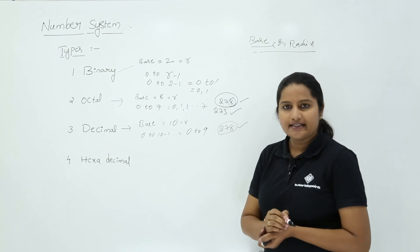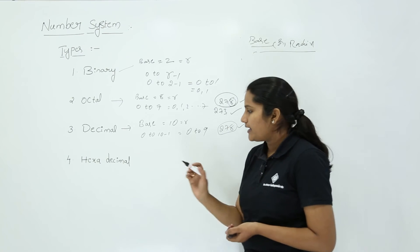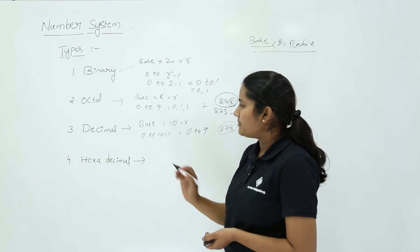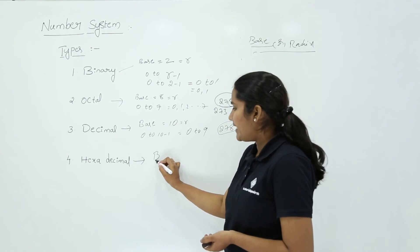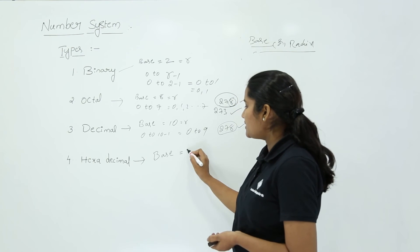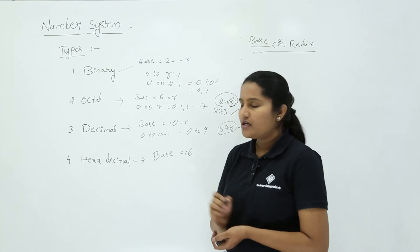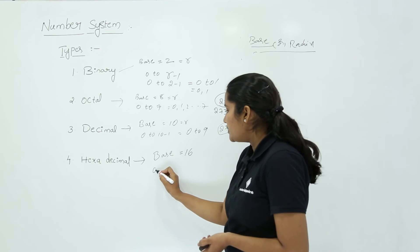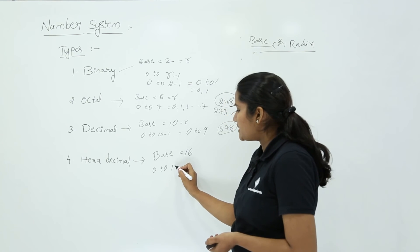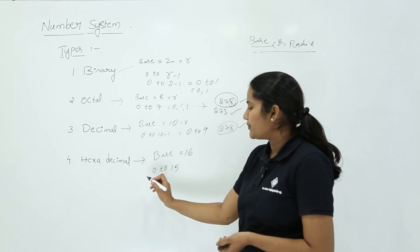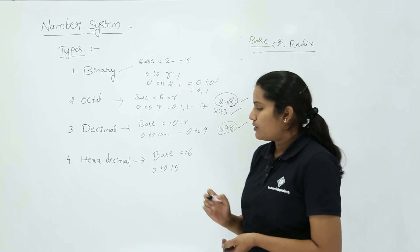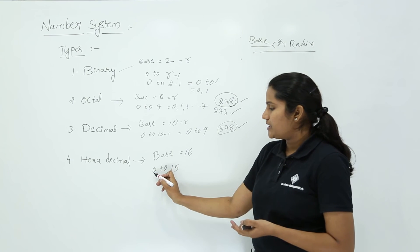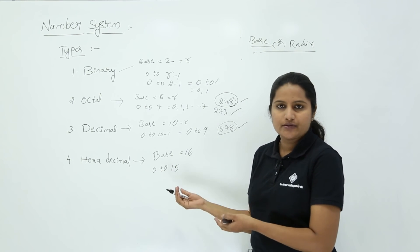Finally, we will look at the hexadecimal number system. For hexadecimal, the base or radix is equal to 16. The maximum value of digits we can use is 0 to 16 minus 1, which means up to 15. In hexadecimal, the digits 0, 1, 2, 3, up to 9 are used as they are.